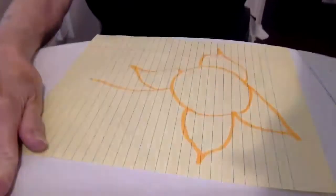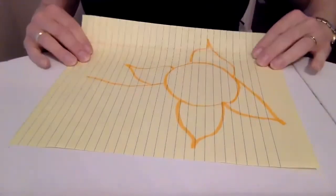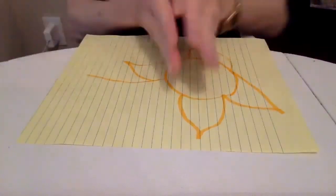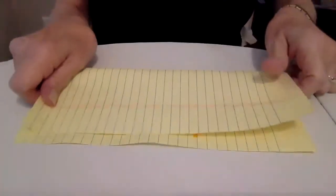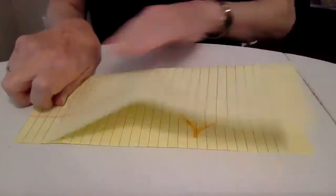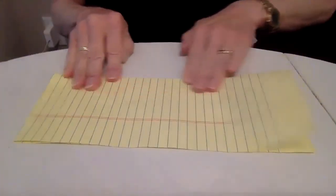You take a piece of paper that you don't want anymore, and turn it the long way, and you fold it in two and make a crease.